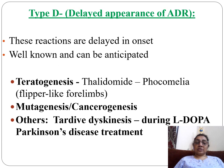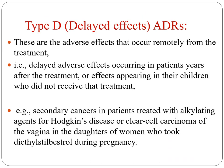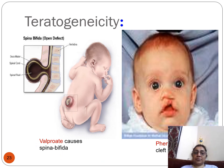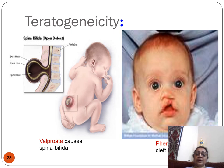Other delayed adverse drug reactions include tardive dyskinesia during L-Dopa treatment for Parkinson's disease. The picture shows phocomelia occurring due to thalidomide treatment during pregnancy. Other teratogenic examples include valproate causing spina bifida in the fetus if taken during pregnancy, and phenytoin causing cleft lip and cleft palate in the offspring.